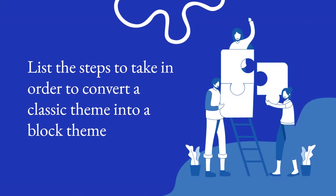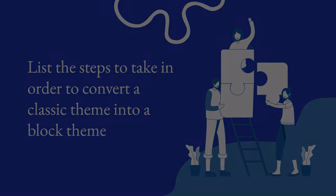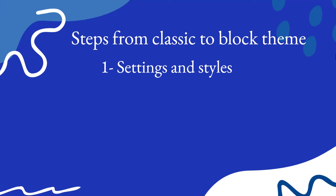Let's now take a look at the steps to take in order to convert a classic theme into a block theme. Your first step is to take a look at settings and styles. You can bridge the gap between a classic theme and a block theme by simply adding theme.json to your theme — you can learn more about that in the previous lesson within this module — or you can choose to add theme support for blocks within functions.php.